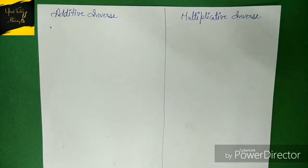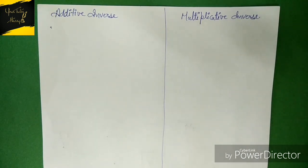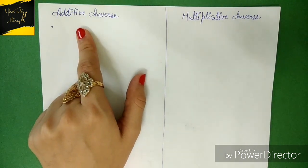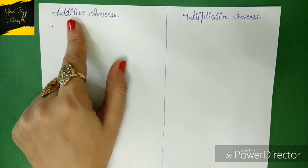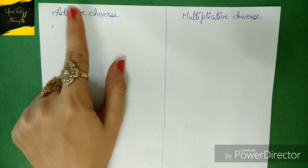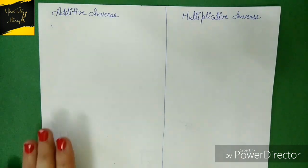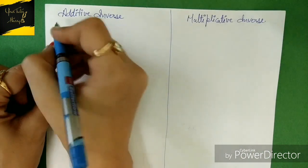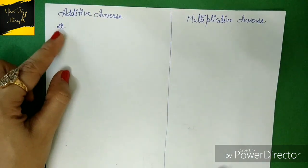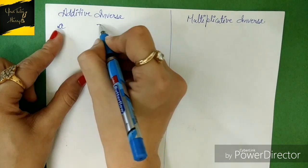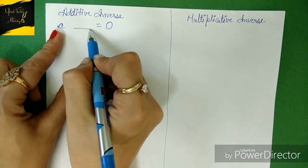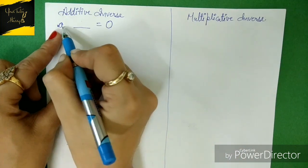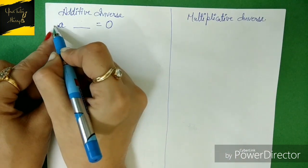Most students get familiar with this topic in eighth class. So without wasting time, let's start. First of all, I'm going to tell you about additive inverse. The term 'additive' means addition. So suppose I'm taking one digit 'a' — what should be added to this to get a result of zero?